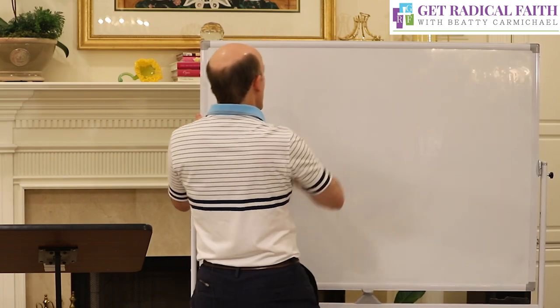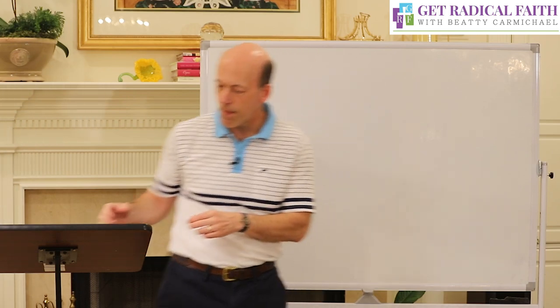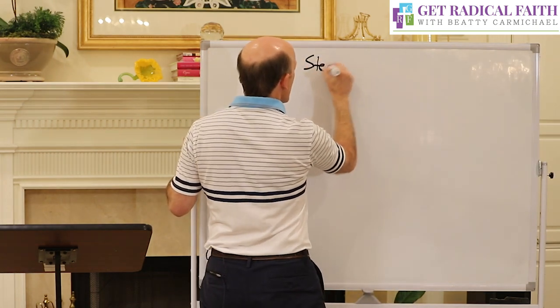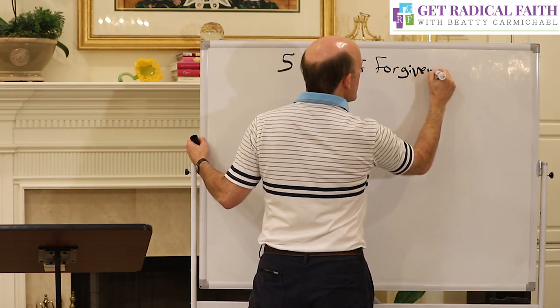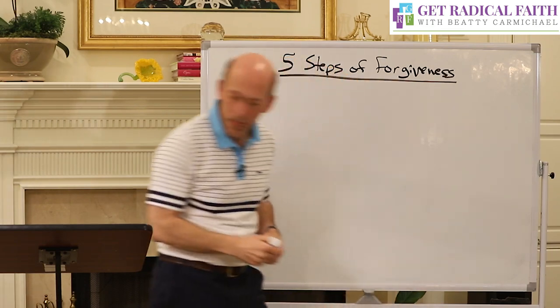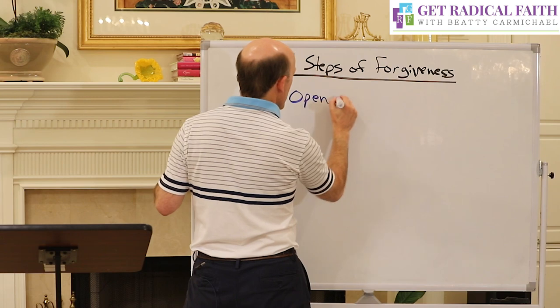With that, I want to walk through five simple steps to make forgiveness easier. On some things, it's fairly easy to forgive — like when a three-year-old says something mean, you know he didn't really mean it. But when someone you really love, who is mature and knows what they're doing, purposely hurts you — that's really hard to forgive because of the intentionality. So here are the five steps of forgiveness.